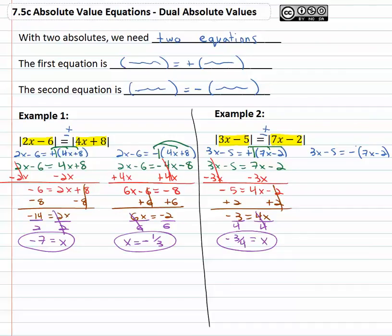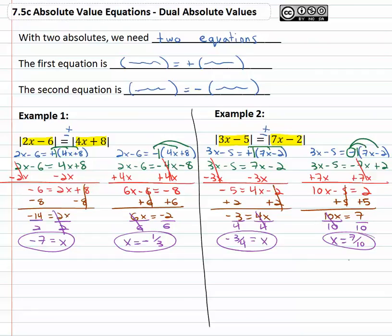To get our second solution of what number x could represent, we need to distribute that negative through the parenthesis. Remember that's a negative one, so we have 3x minus 5 equals negative 7x plus 2, negative times a negative is a positive. Be careful with the signs. Get the variable on one side by adding 7x to both sides. We get 10x minus 5 equals 2. Add 5 to both sides giving us 10x equals 7, and finally we'll divide both sides by 10 to get our final answer x is equal to seven tenths.